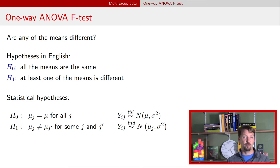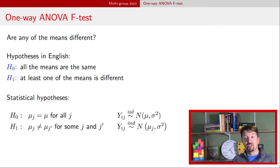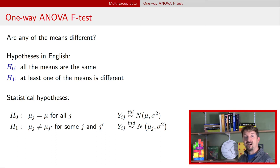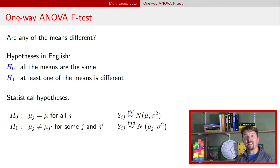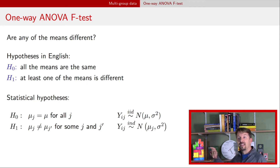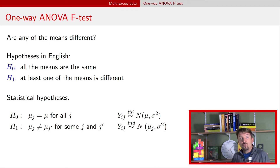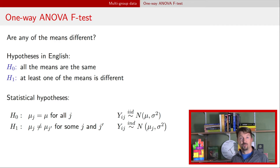I like to think about these hypotheses as models for the data. The null model says observations are i.i.d. normal with a common mean mu and variance sigma squared. The alternative says each group has its own mean, otherwise observations are independent with constant variance. Thinking of it this way makes the construction of the ANOVA table and the related F-test more clear — we're comparing the model where means are all the same versus one where the means are all different.